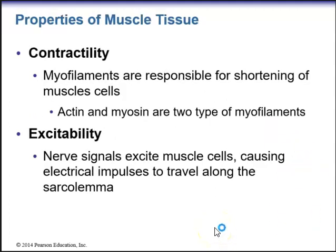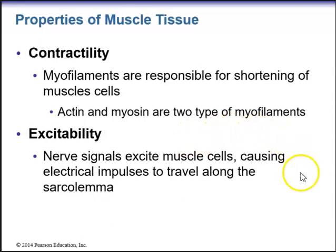We have different properties of muscle tissue. We have contractility — myofilaments are filaments within the muscle responsible for shortening of muscle cells. There are two types of myofilaments: actin and myosin. Excitability — nerve cells excite muscle cells, causing electrical impulses to travel along the sarcolemma.